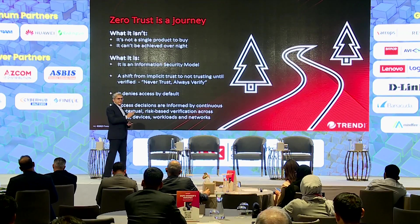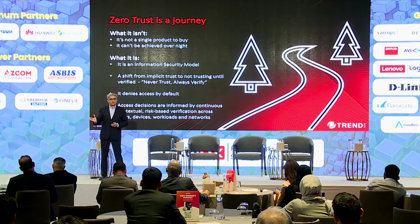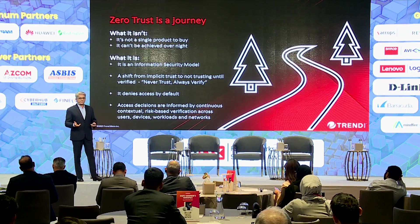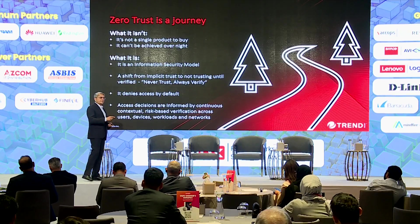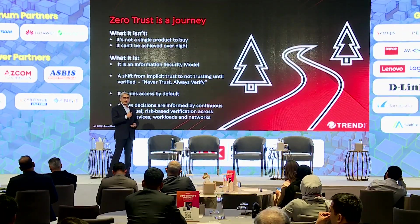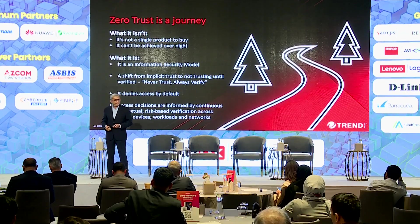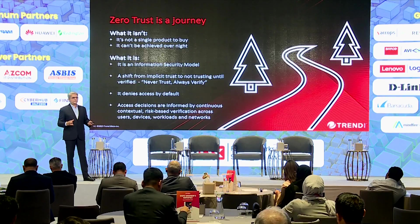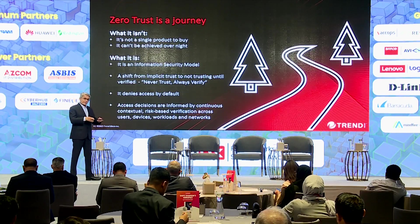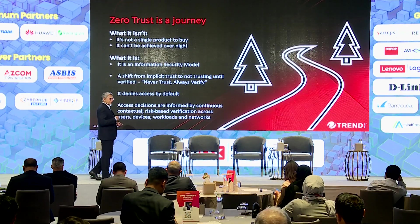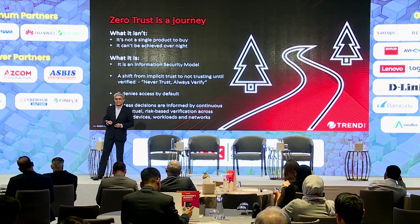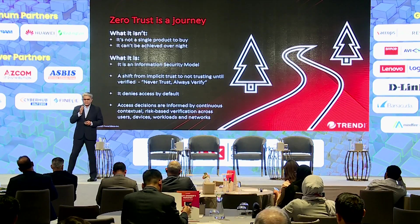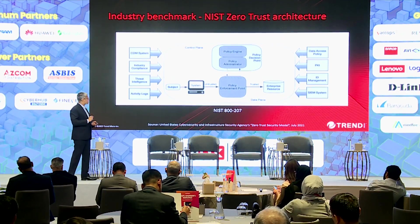Access decisions are formed based on various parameters, with risk being the most critical when adopting and deploying zero trust. It is about users, devices, and workloads — which could be on-premise critical servers and databases, or workloads in a public cloud like Azure, AWS, or Google Cloud. You need complete visibility of your entire infrastructure — that is where attack surface management and zero trust work hand in hand.